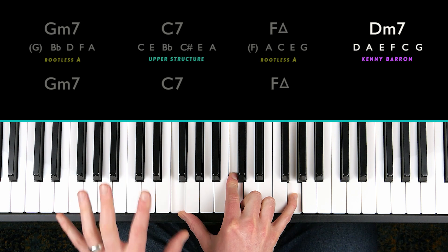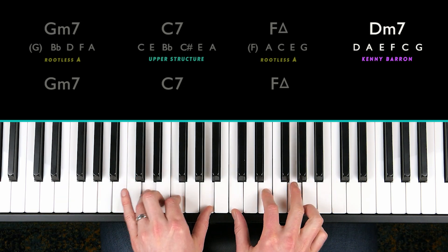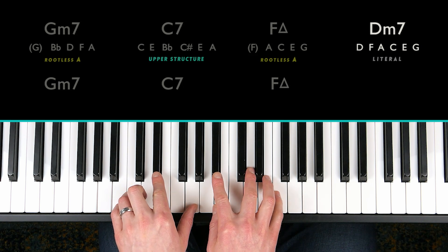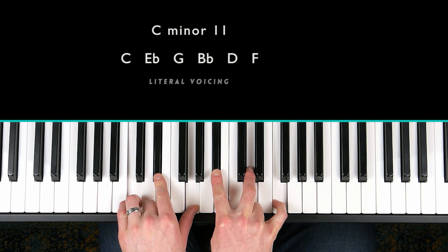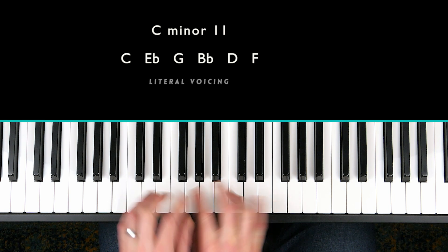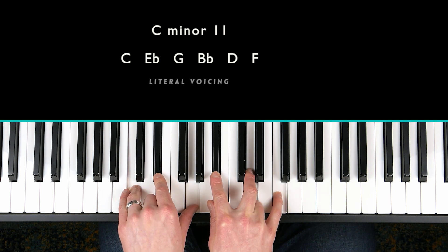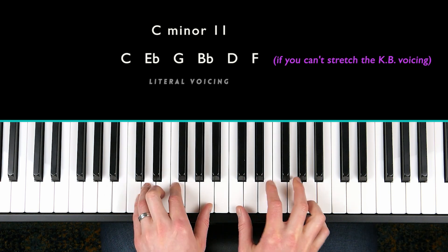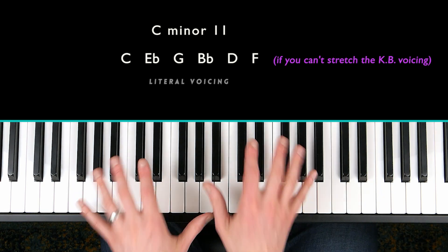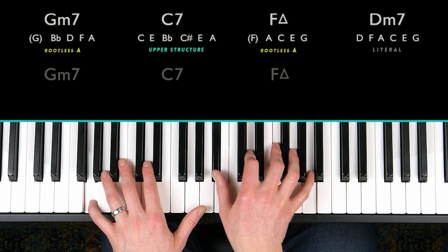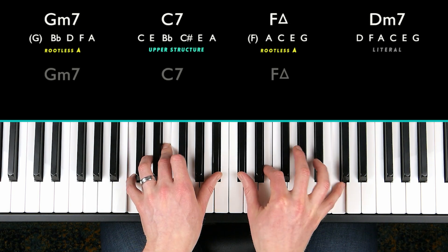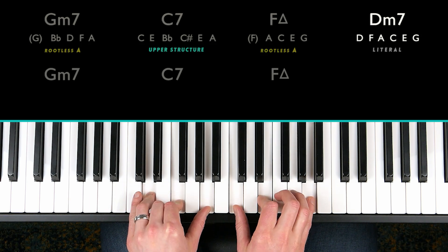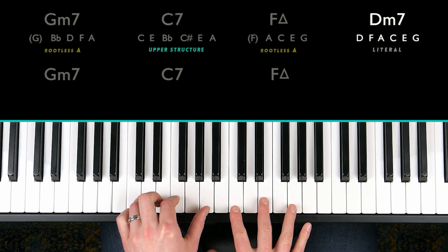If you can't stretch this voicing though, then I suggest you use this voicing for D minor 11. I'll just demonstrate it from C though to begin with. So C minor 11 would be this. It's just a literal chord voicing for C minor 11. So if you can't stretch the Kenny Barron voicing, you could play it like this. And that sounds really nice.